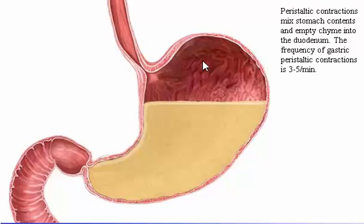Throughout the GI tract, the frequency of peristaltic contractions remains constant and is controlled by the interaction between pacemaker cells and smooth muscle cells. Each segment of the tract has a characteristic frequency. The frequency of gastric peristaltic contractions is 3 to 5 per minute. Click the body to observe peristalsis.